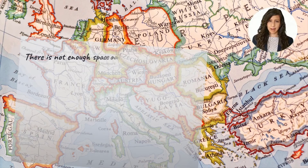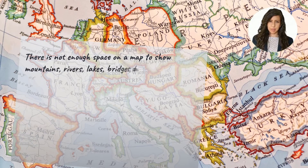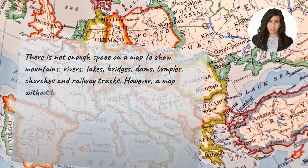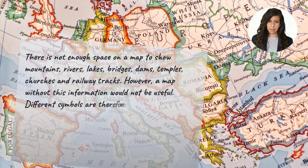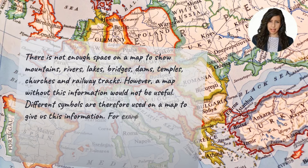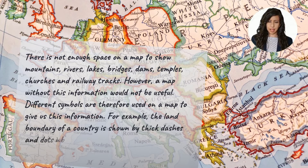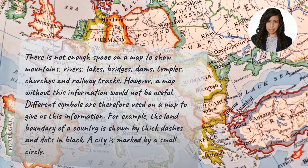Symbols: Map par paharon, nadiyon, lakes, bridges, dams, mandiron, churchon aur rail ki patriyon ko alag alag symbols ka upyog kiya jata hai. Udaharan ke liye, kisi desh ki boundary ko kaale rang se mote dash aur dots dwara dikhaya jata hai. Ek shahar ko ek chhote circle dwara mark kiya jata hai.